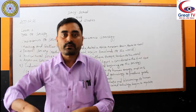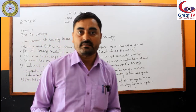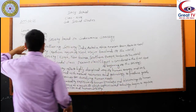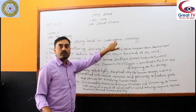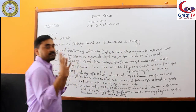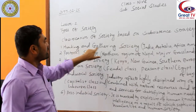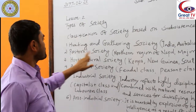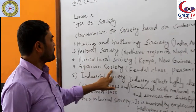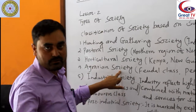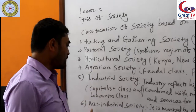Based on subsistence strategy, there are six types of societies as I have written on the board. Look here — classification of society based on subsistence strategy. The six types are: number one, hunting and gathering society; pastoral society; horticultural society; agrarian or agricultural society; industrial society; and post-industrial society.